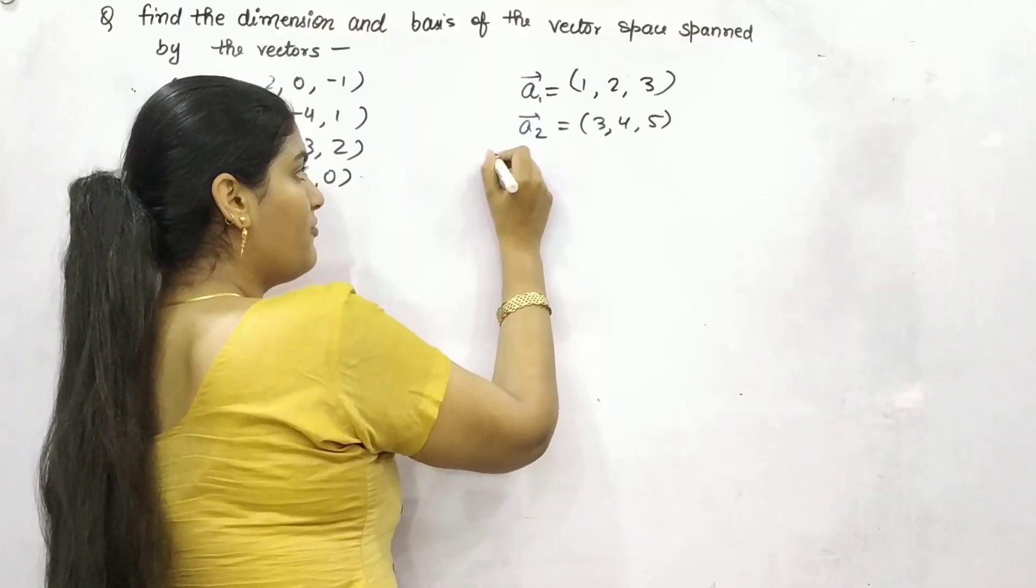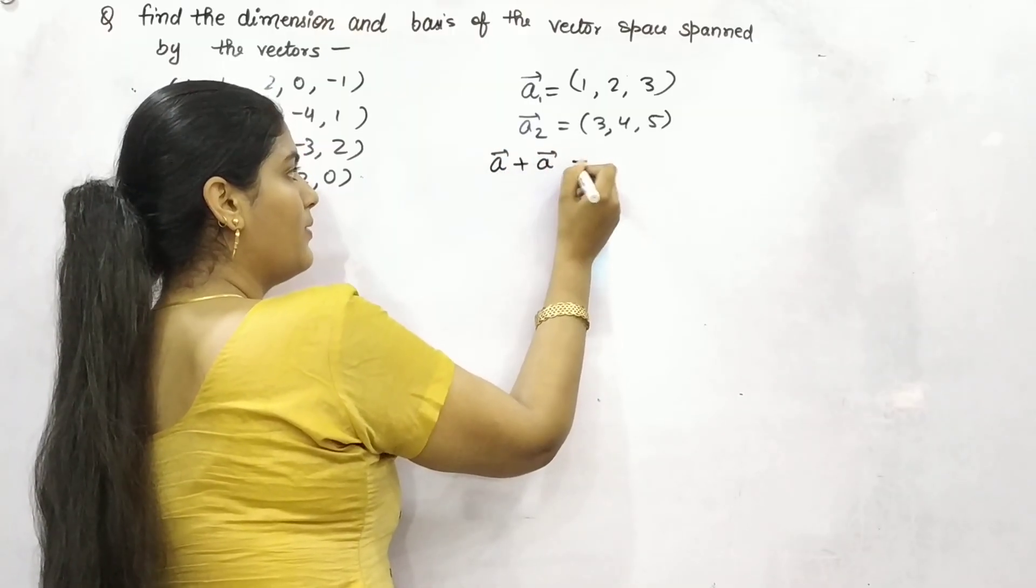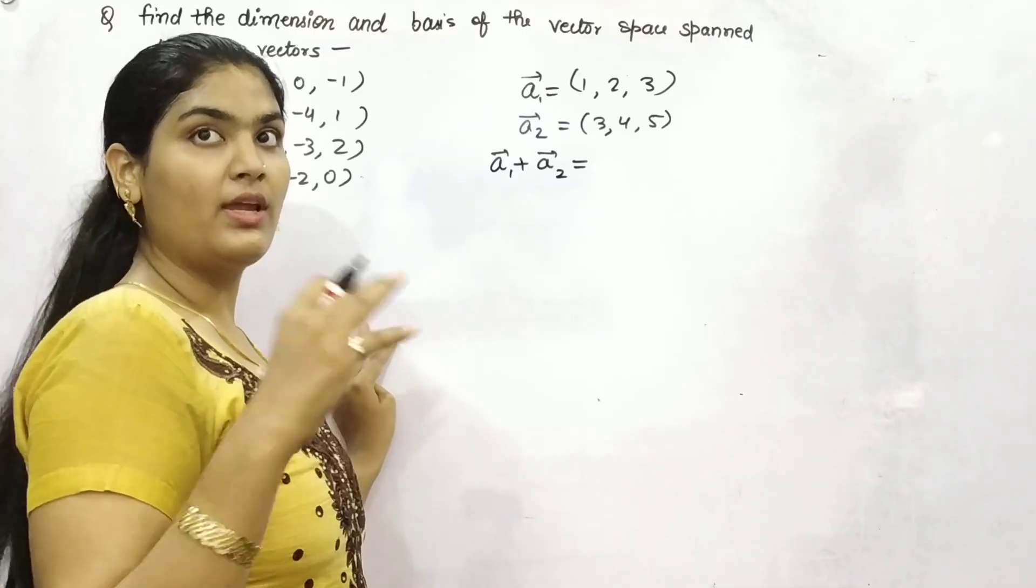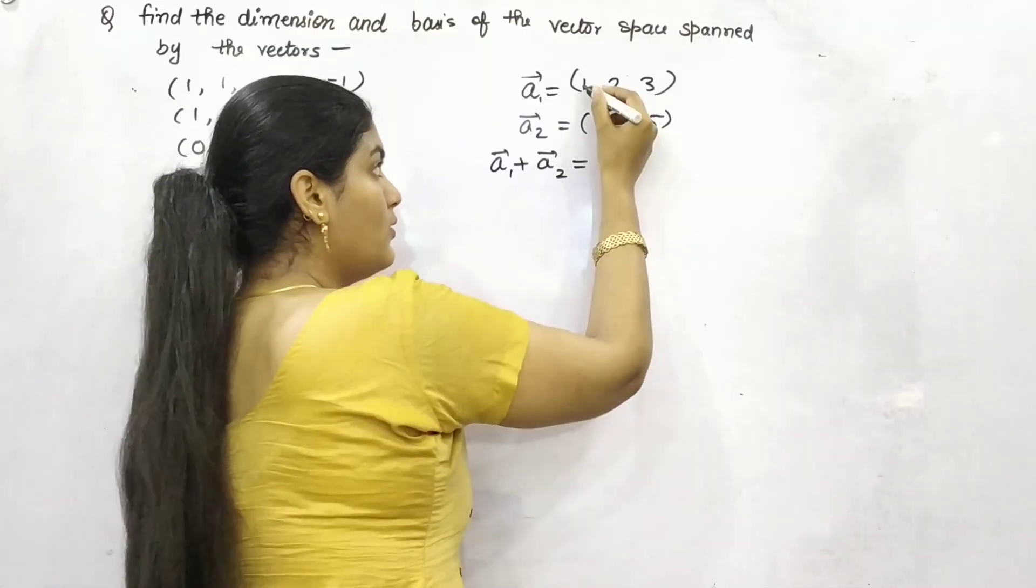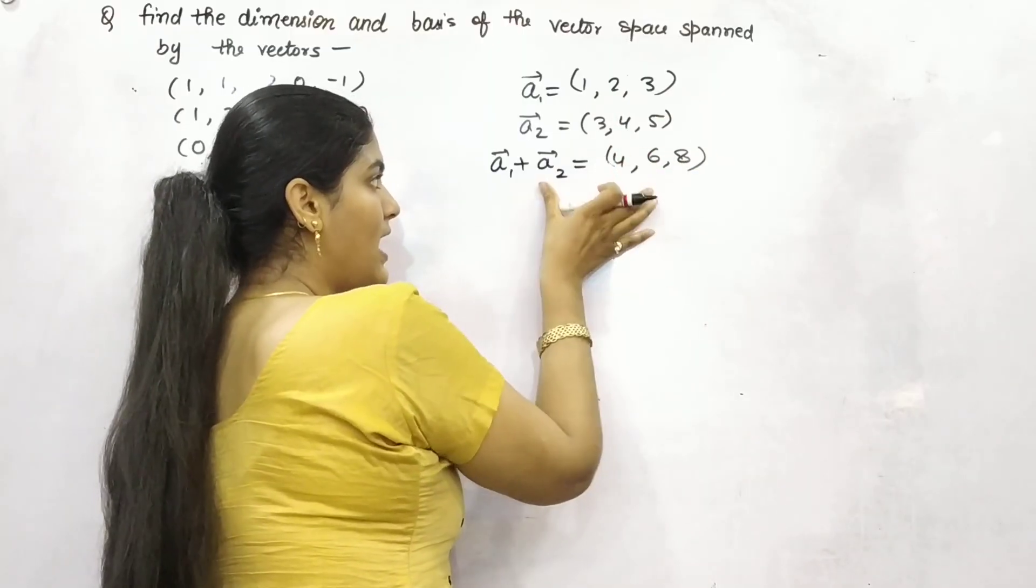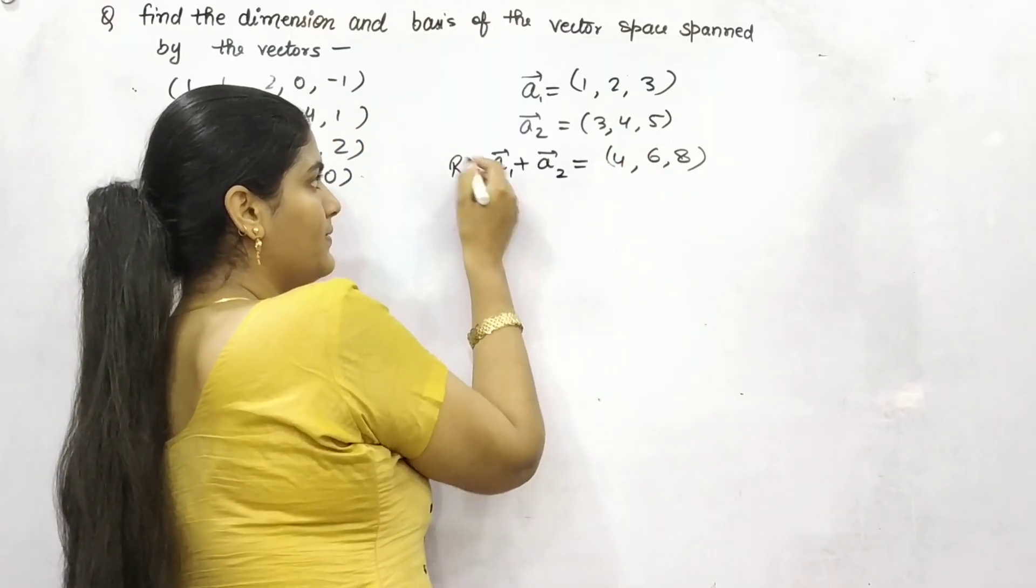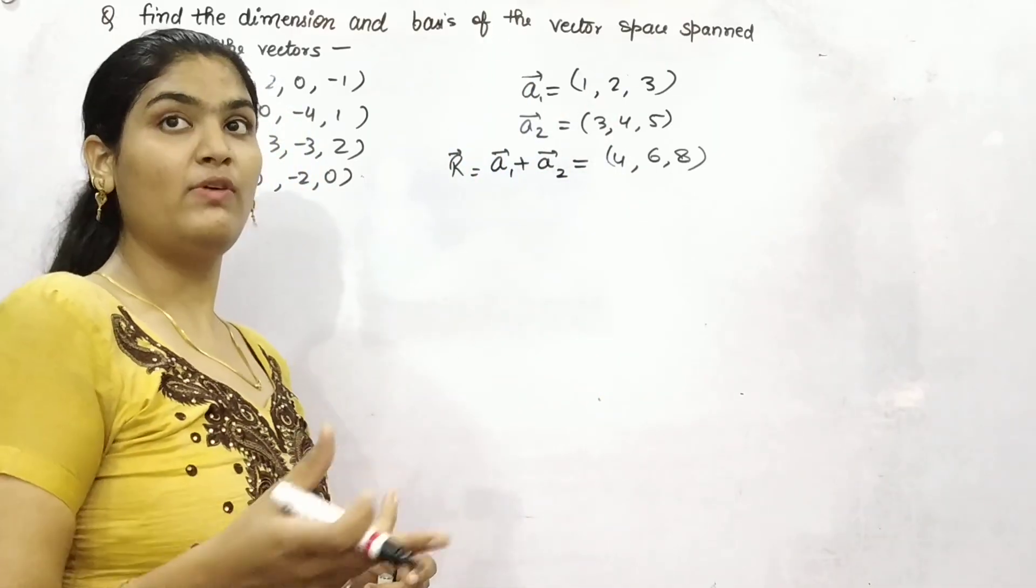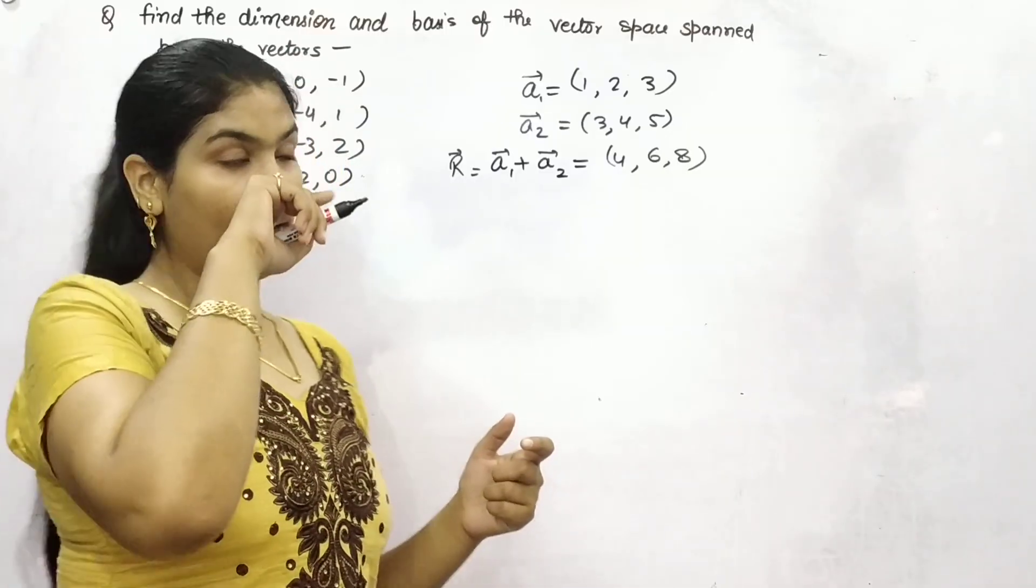Whereas if we add them up or any operation which can correlate them, so you can see 4, 6, and 8. Now the resultant is dependent on a1 and a2. That will be counted as linearly dependent.